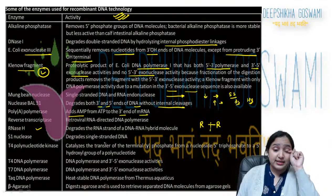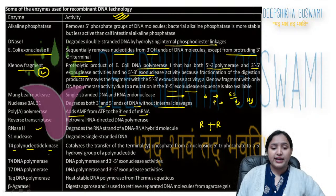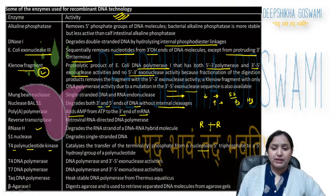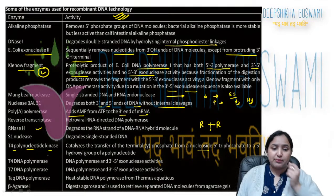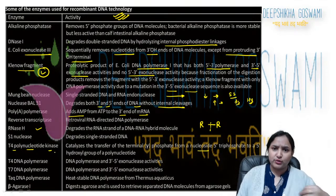S1 nuclease degrades single-stranded DNA. T4 polynucleotide kinase catalyzes the transfer of the terminal phosphate from a nucleoside 5'-triphosphate to a 5'-hydroxyl group of a polynucleotide — it adds the gamma phosphate.